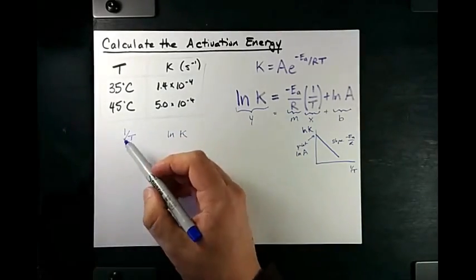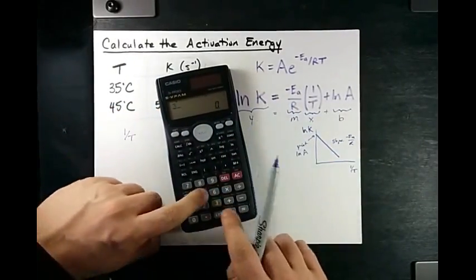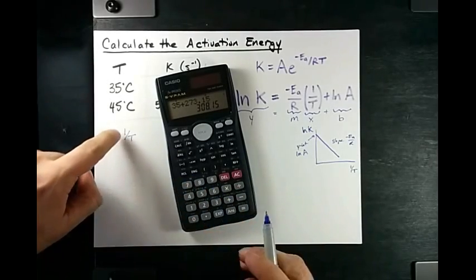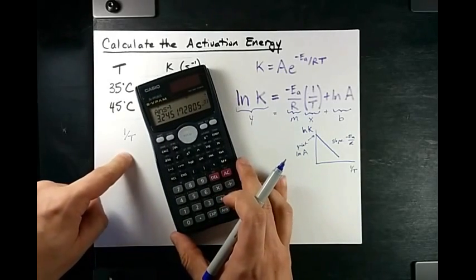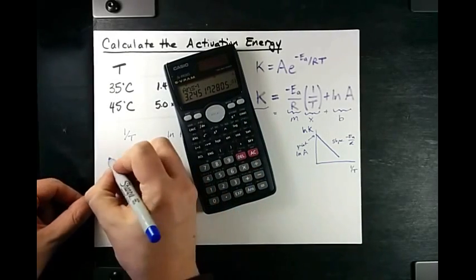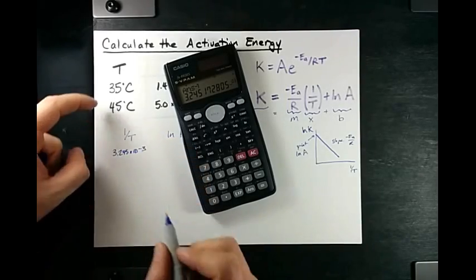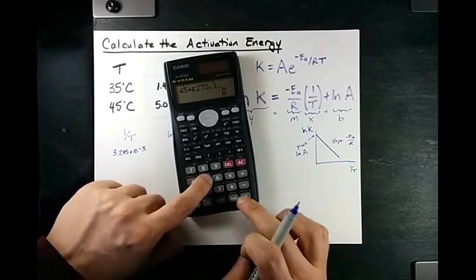Now, in order to do this, I need to calculate my temperatures in Kelvin, 35 plus 273.15, and I need to do 1 over that, which gives me 3.245 times 10 to the negative 3 for 35 degrees Celsius.